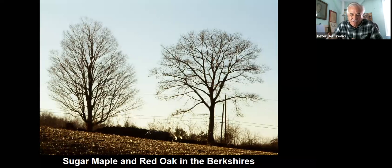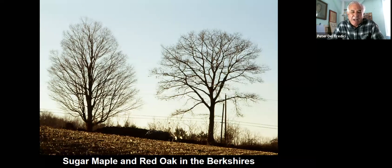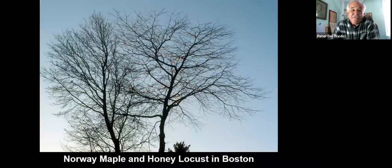You can see on the left-hand side the upright oval of the sugar maple and the spreading umbrella form of the red oak. Learning how to identify trees in winter based on their form really takes time, but once you get into it, it's not that hard to actually learn how to identify these trees.